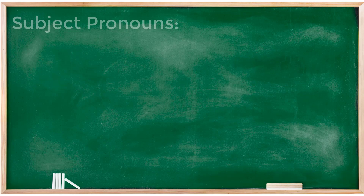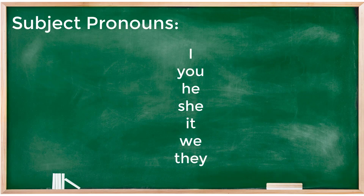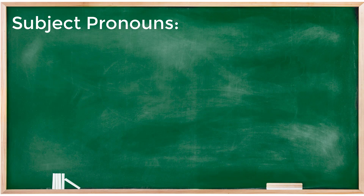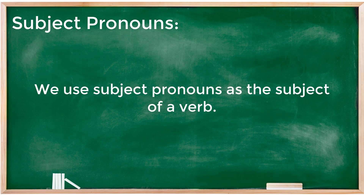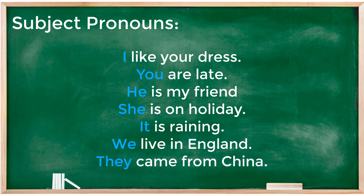Let's start with subject pronouns. Subject pronouns are: I, you, he, she, it, we, they. We use subject pronouns as the subject of a verb. For example: 'I like your dress' — I is used as the subject of 'like'. Other examples: 'You are late', 'He is my friend', 'She is on holiday', 'It is raining', 'We live in England', 'They came from China'.